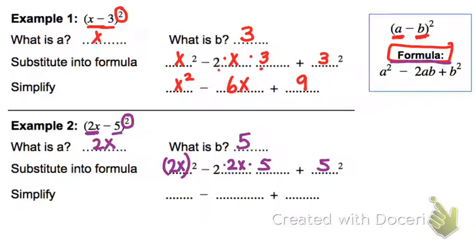And then again, once you have it substituted in, you can simplify. So 2x squared, so 2 squared, which is 4. X squared, which is x squared. And then I can simplify this by multiplying just the numbers. 2 times 2 times 5 would be 20, so 20x. And then 5 squared is 5 times 5, which is 25.